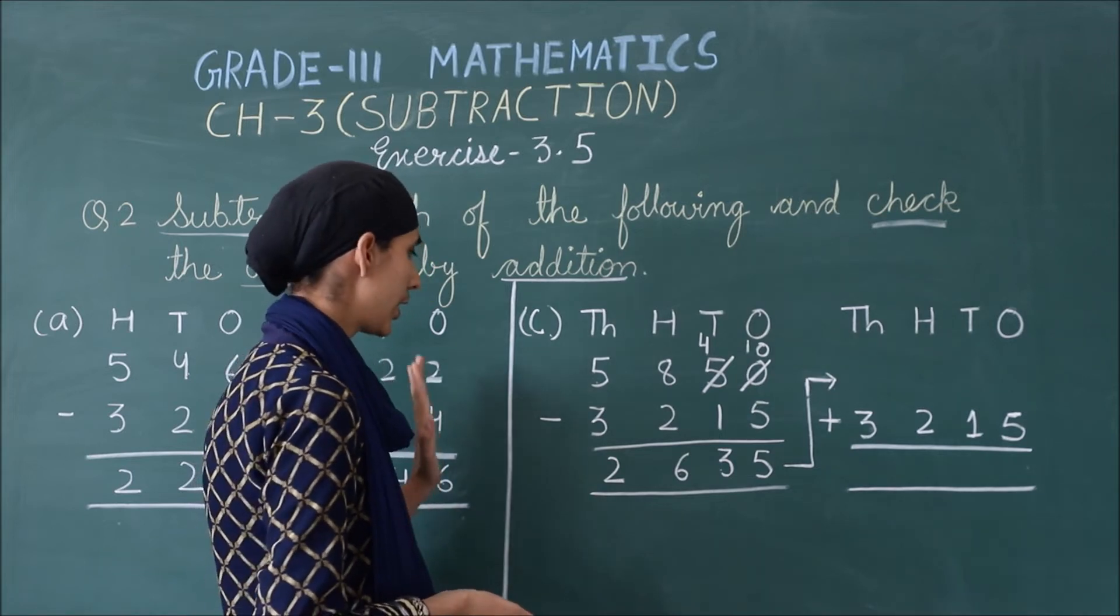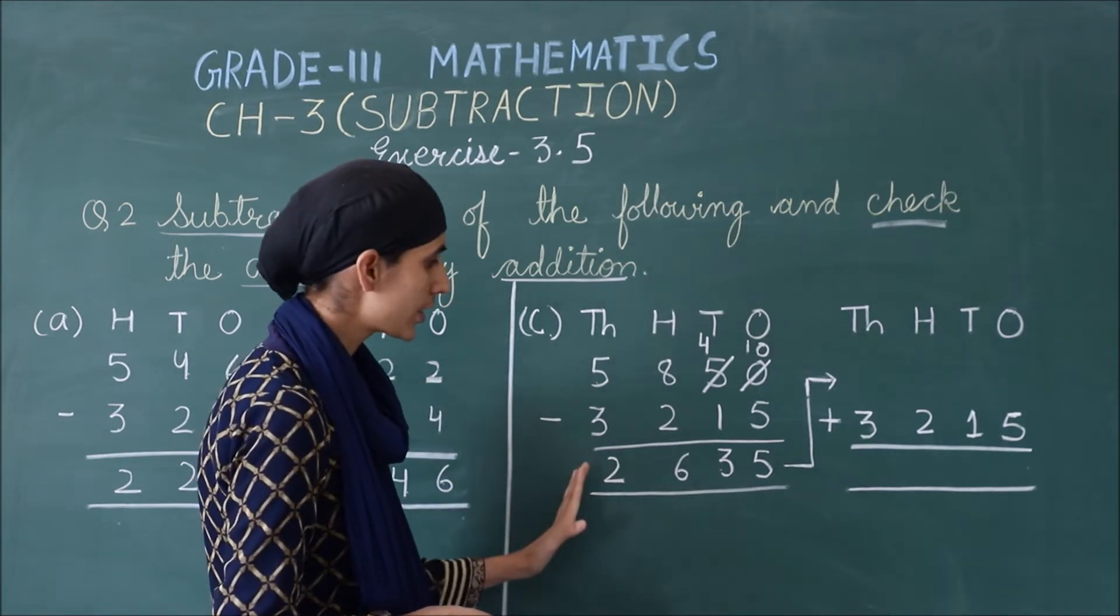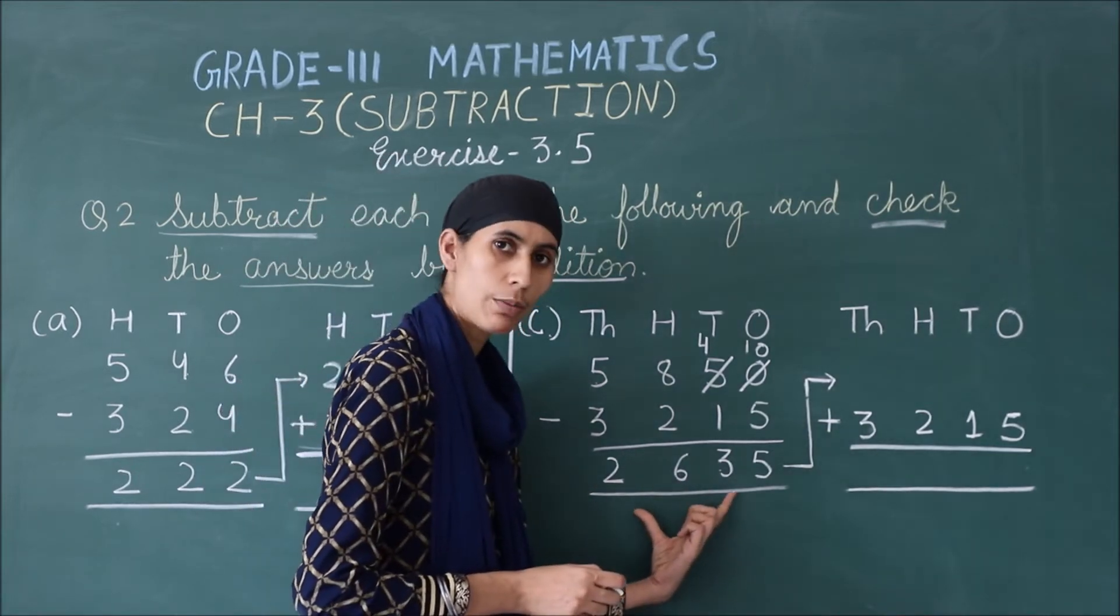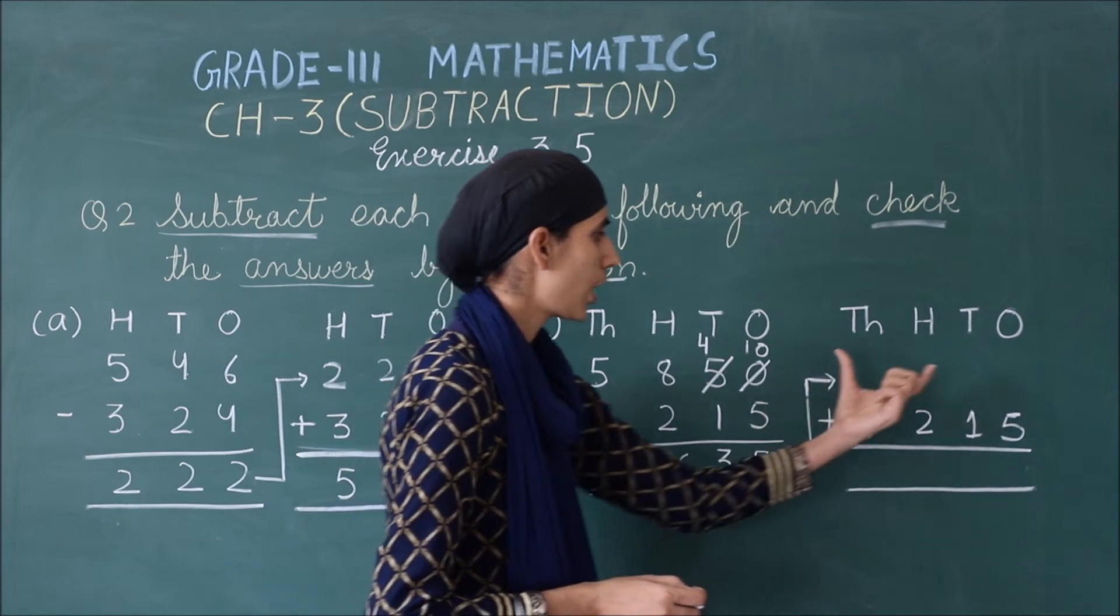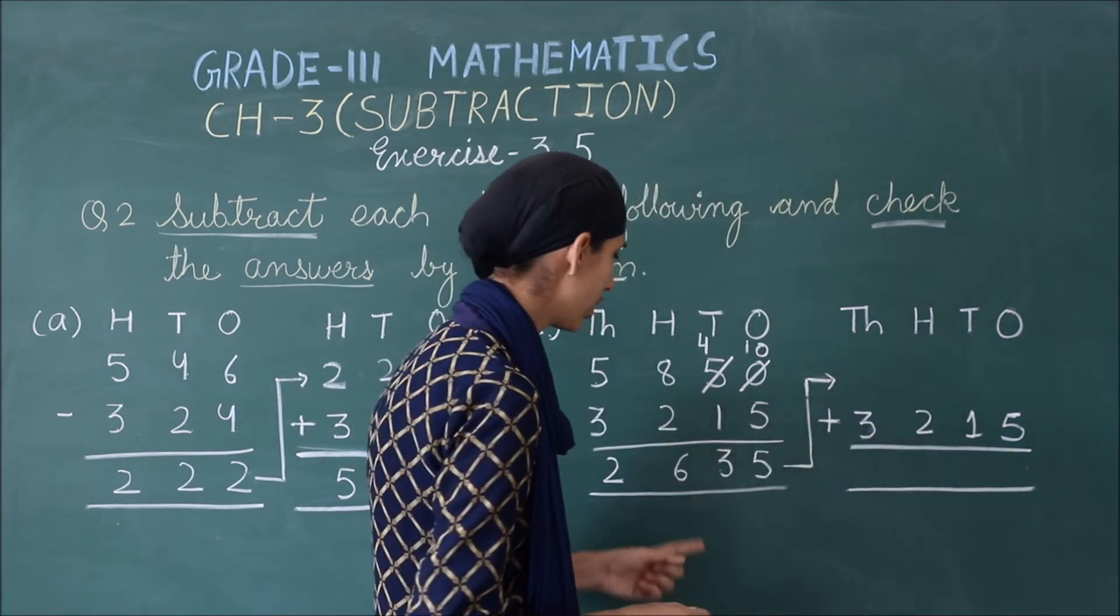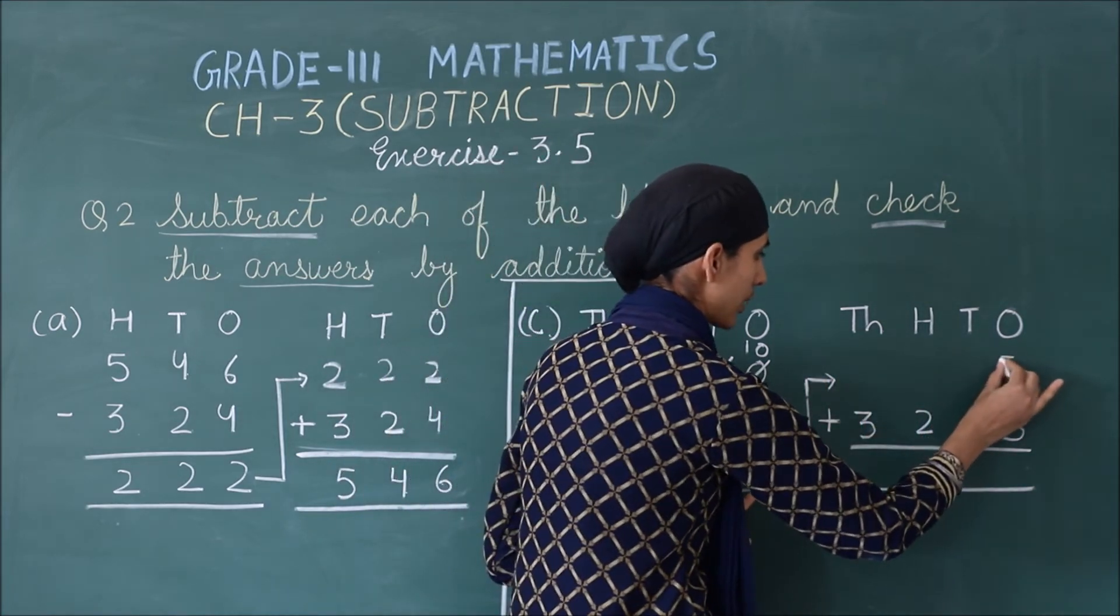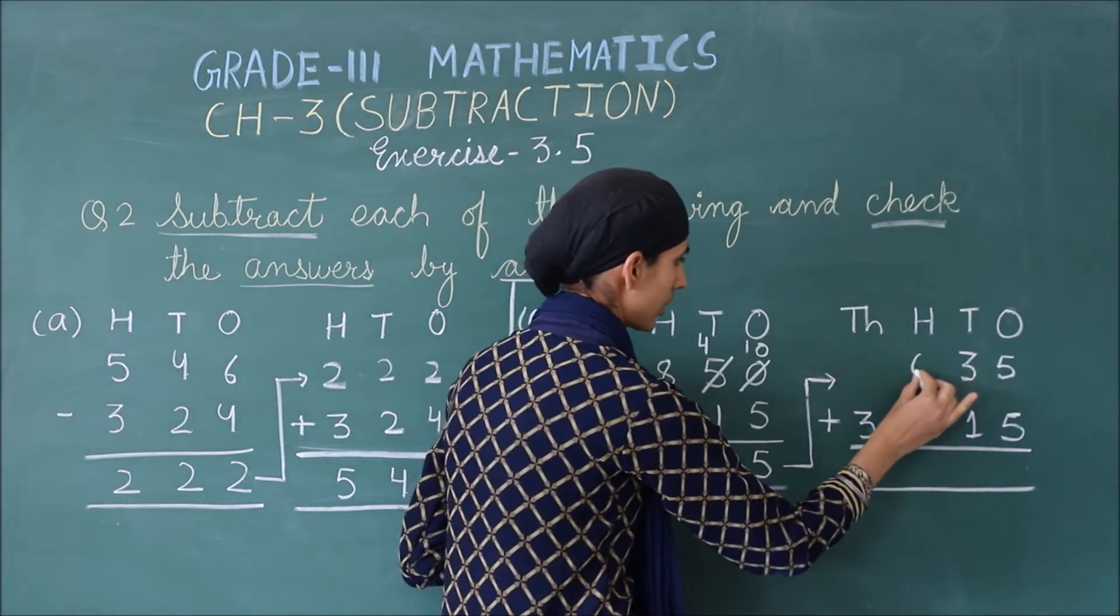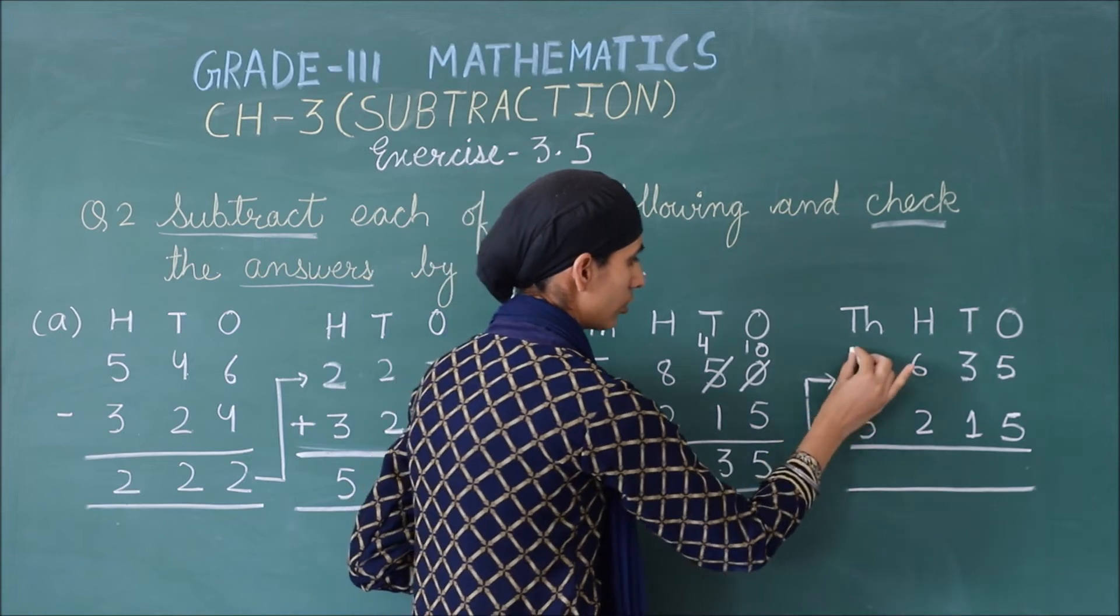We have this step followed in this part. We will check the subtraction. So our answer is the difference, we will write it down here. Okay, so start from the 1's place, 5, then you are having 3, next is 6, and then you are having 2.